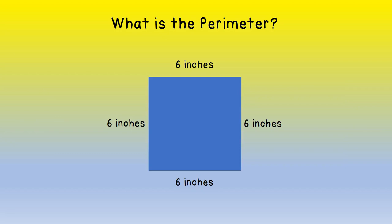On this square, we have four sides, each side measuring 6 inches. 6 plus 6 plus 6 plus 6 is 24 inches.